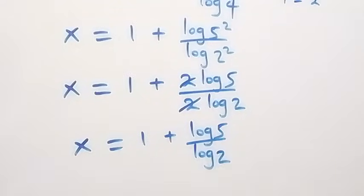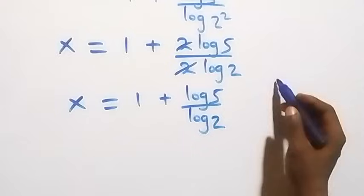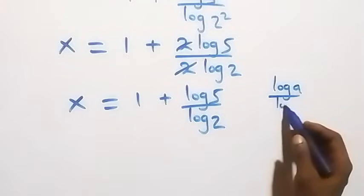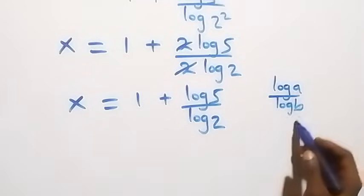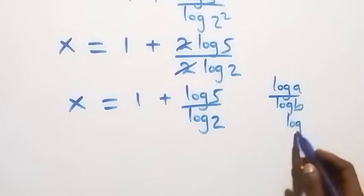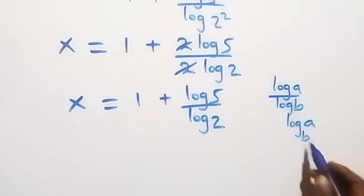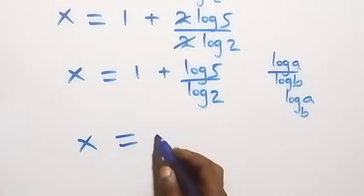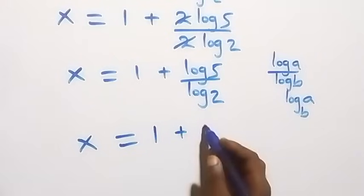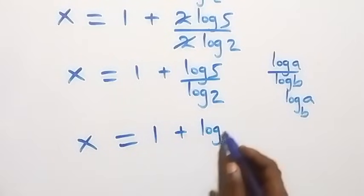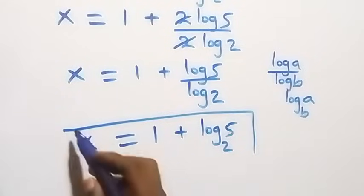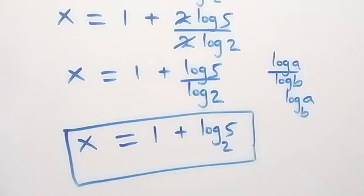We apply the change of base formula, where log a over log b can be written as log a to base b. Therefore x equals 1 plus log 5 to base 2.